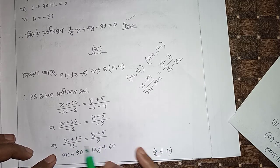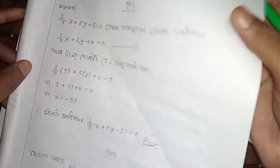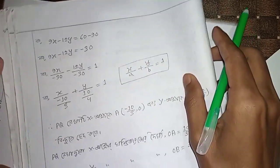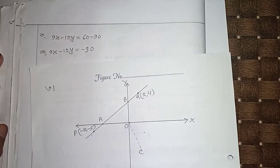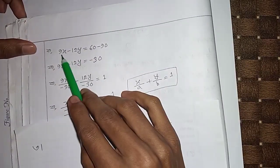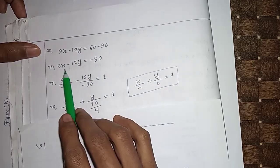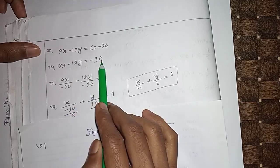9x plus 9 times 10 by 12xy plus 1 by 6. x plus 9x minus 12y equal to 60 minus 90. 9x minus 12y equal to minus 30.